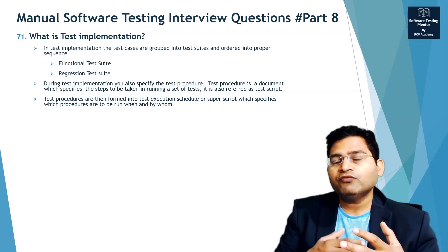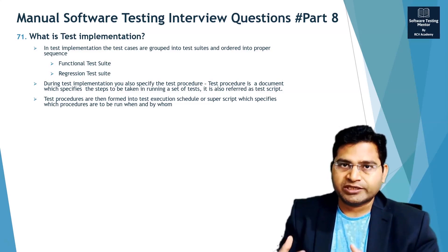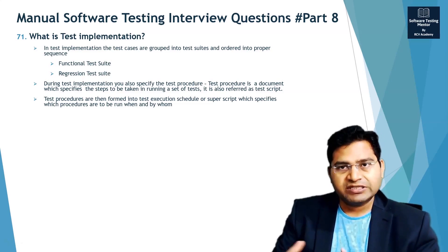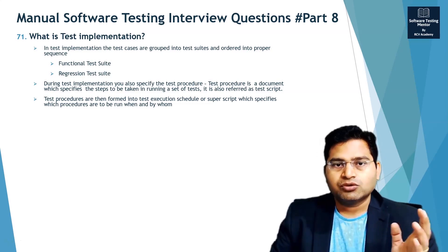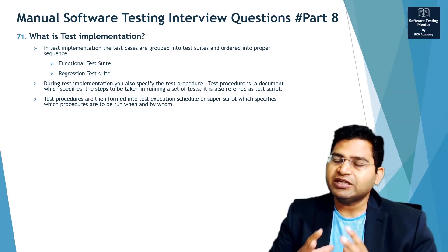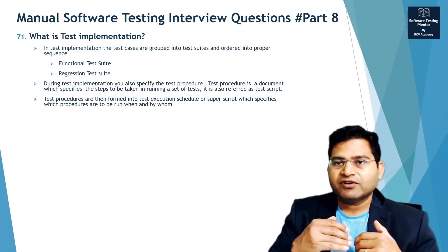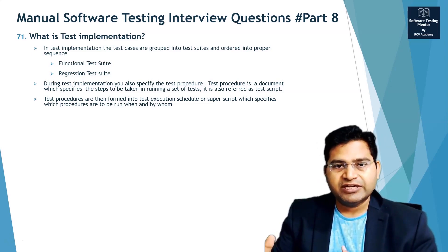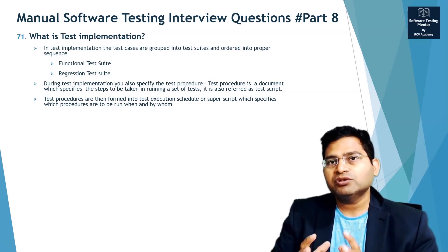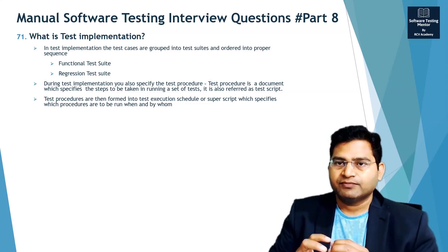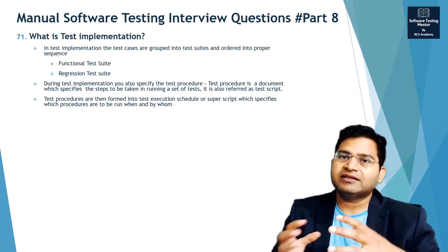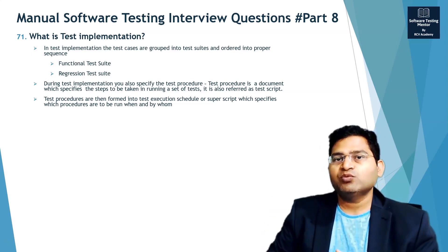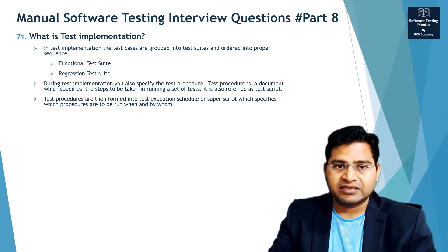So in the test implementation you come up with logical suites and formulate a proper sequence. For example, for functional testing, what sort of suite you are going to cover, and for regression testing, what you are going to do. If you have written all the relevant test cases, you add those into different test suites — a set within which you specify the test cases to execute as part of the regression cycle.